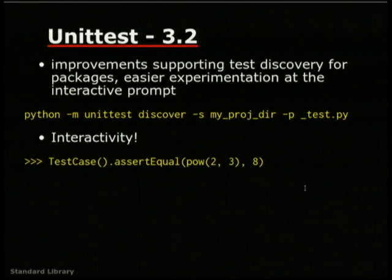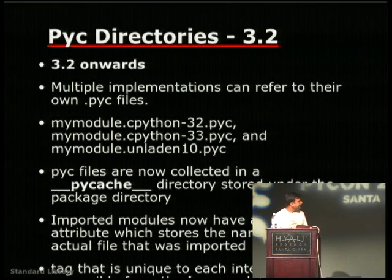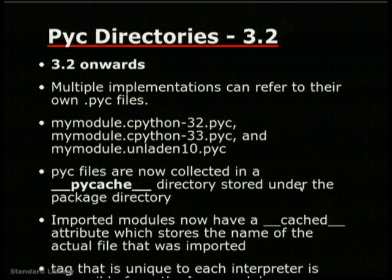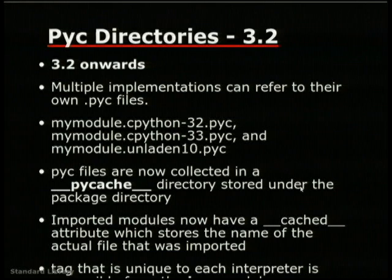unittest2 has seen a lot of improvements including added discoverability, added by Michael Foord from Python 3.2 onwards. Regarding .pyc directories: multiple Python implementations can now refer to their own pyc directories, like CPython 3.2.pyc, 3.3.pyc, or Jython 1.0.pyc. The .pyc files are now collected in __pycache__ directories. The motivation was likely Ubuntu's packaging system wanting to ship packages compiled against different versions of Python — Barry Warsaw was one of the prime movers for having pyc directories in Python 3, available from 3.2 onwards.